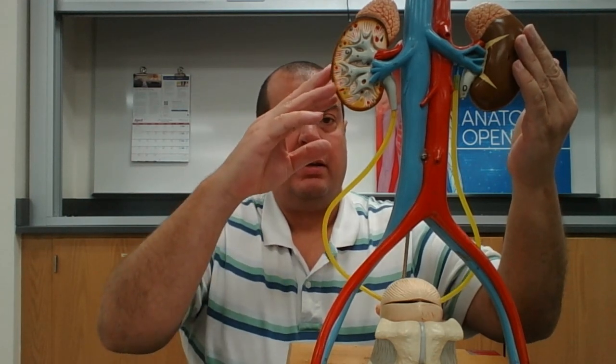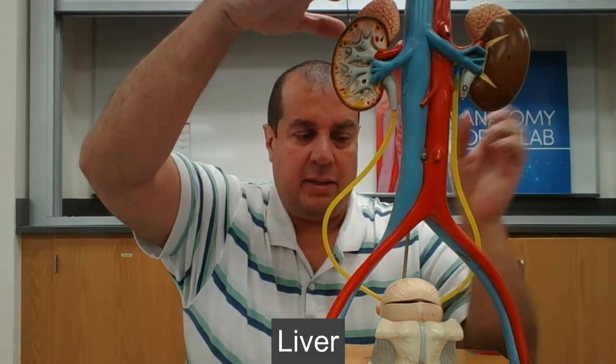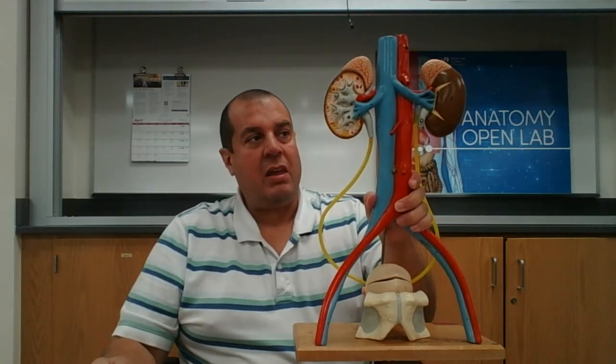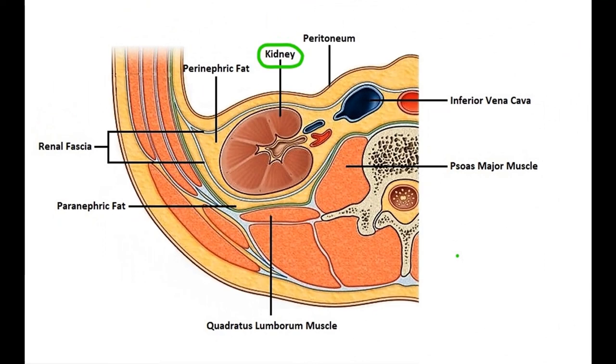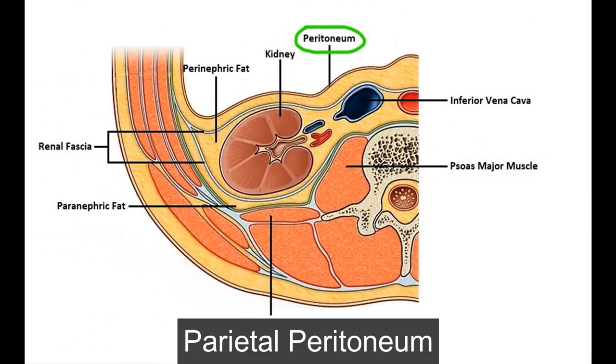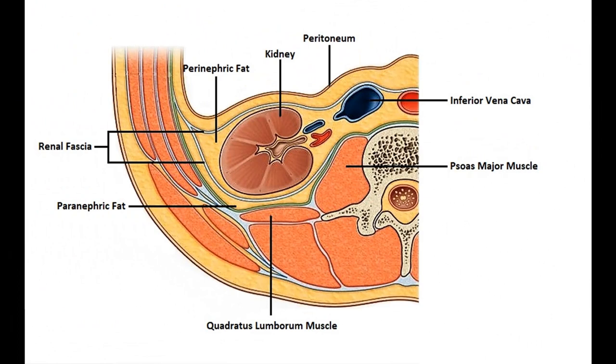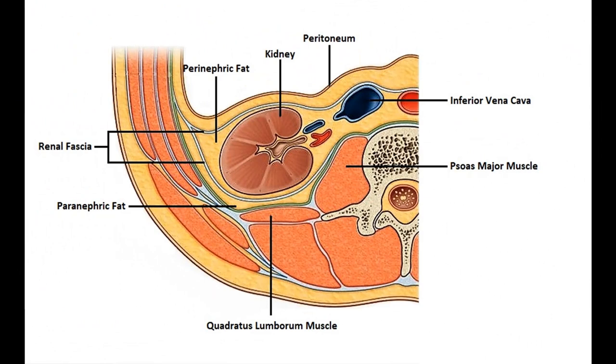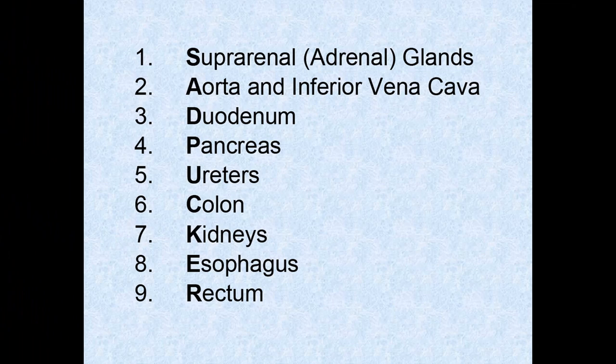Notice that the left kidney is positioned more to the back and higher than the right kidney. The reason is that the liver sits on the right side and pushes that kidney down a little further. Another interesting feature is that the kidneys lie retroperitoneal — they sit between the muscles of the posterior body wall and the parietal peritoneum. To remember all retroperitoneal organs, use the mnemonic SAD PUCKER: suprarenal glands, aorta and inferior vena cava, duodenum, pancreas, ureters, colon, kidneys, esophagus, and rectum.